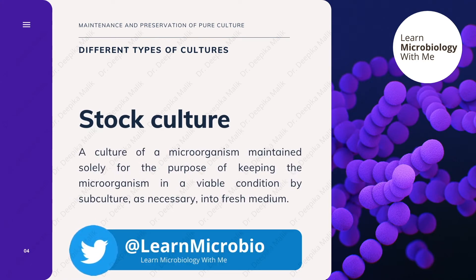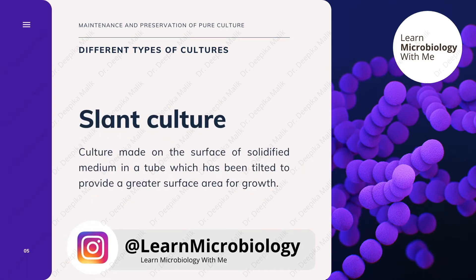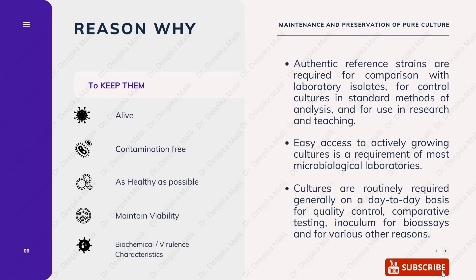When working in a laboratory with a culture strain, it is important to maintain stock cultures. A stock culture is mainly a culture of a pure microorganism which is maintained solely for the purpose of keeping the microorganism in a viable condition by subculturing into a fresh medium. A slant culture is basically a culture made on the surface of solidified medium in a tube which has been tilted to provide a greater surface area for growth.